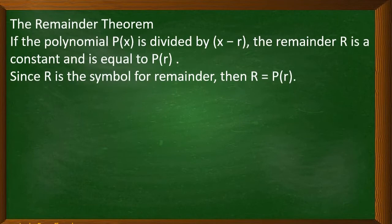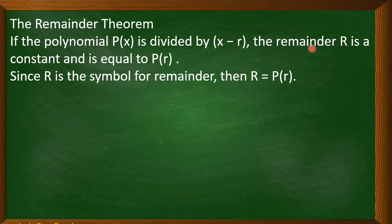Now, let us define first what the remainder theorem is. If the polynomial p of x is divided by quantity of x minus r, the remainder r is a constant and is equal to p of r. Since r is a symbol for the remainder, then r is just equal to p of r.